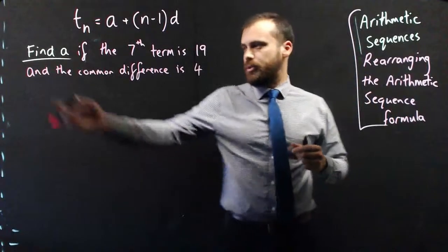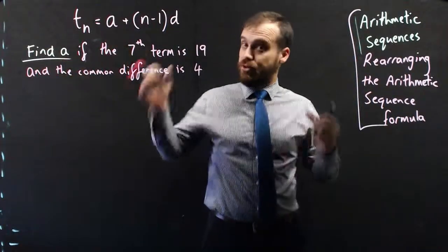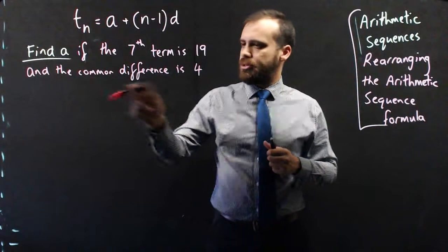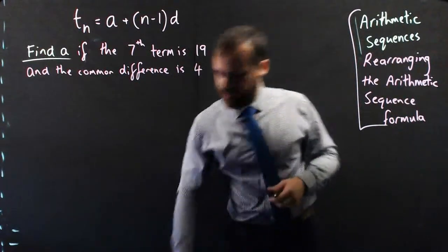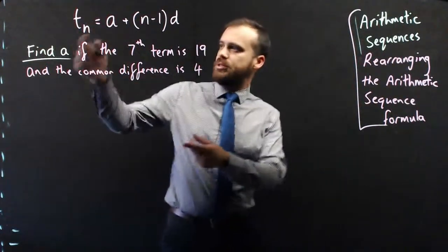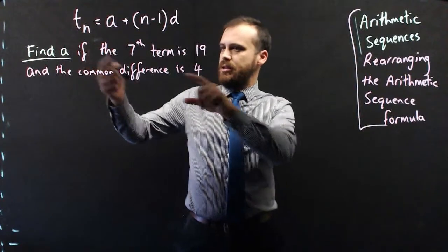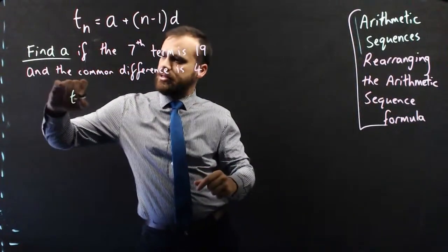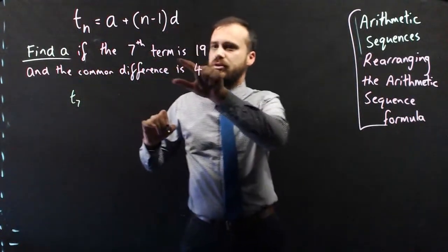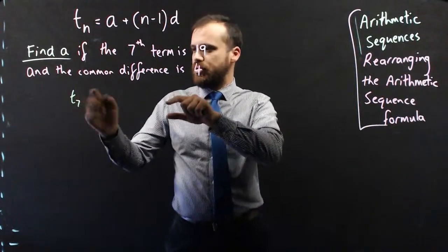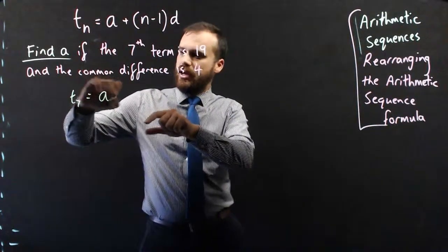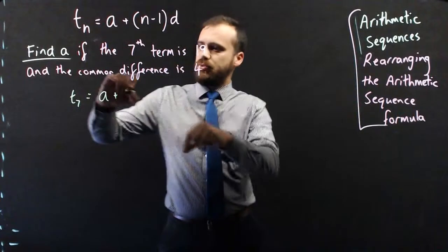For example, what if you were asked to find A, the first term, if the seventh term is 19 and the common difference is 4? Well, we just need to plug it into our formula. Term N, so term in this case 7, the seventh term, is equal to A plus N minus 1.